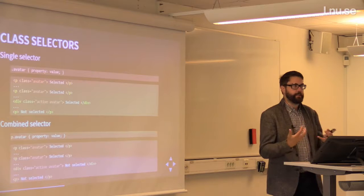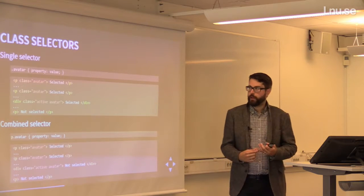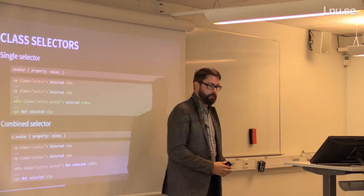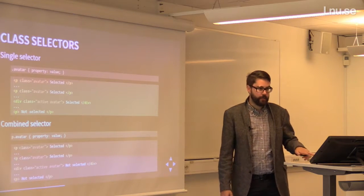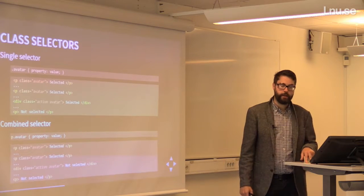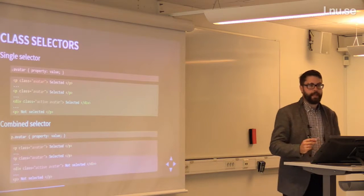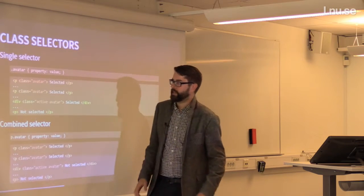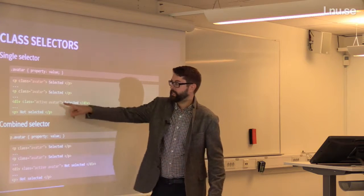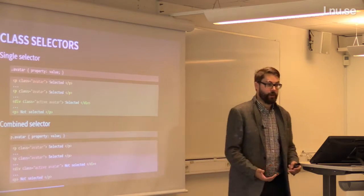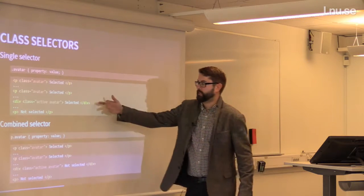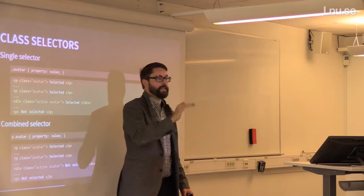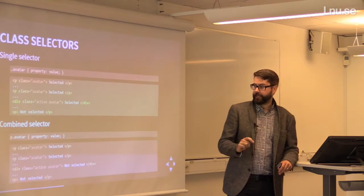There are many more attribute selectors, but the main thing is knowing that you can target elements based on their attributes. You don't need to memorize them all — consult the documentation. You should know by heart: ID uses hashtag, class uses dot, tag selectors, and that attribute selectors exist. Relationship selectors: a space between selectors means descendants. Adding a greater-than sign (>) means direct child only. 'E:first-child' selects the element only if it's the first child — for example, in a UL with three LIs, only the first LI is targeted.